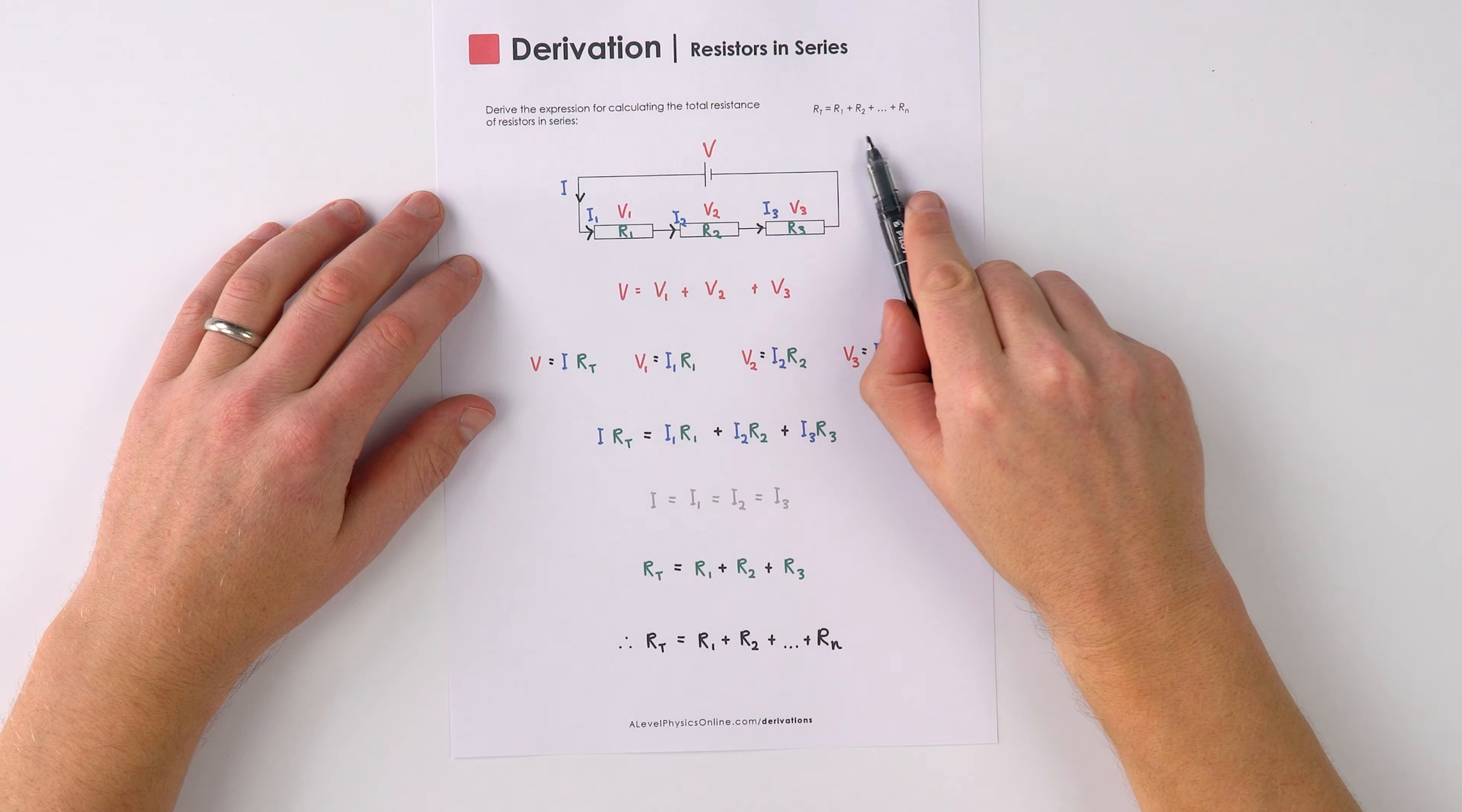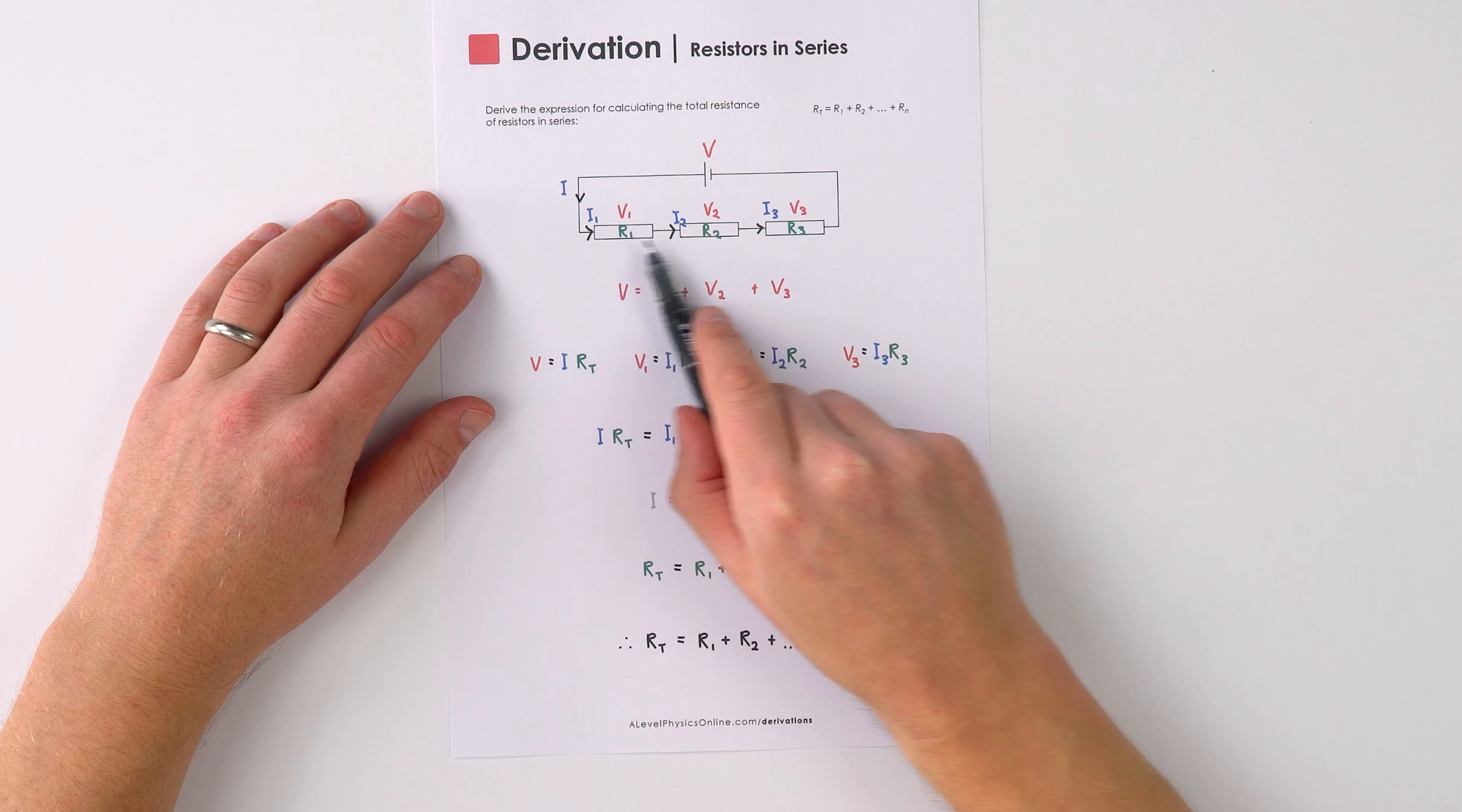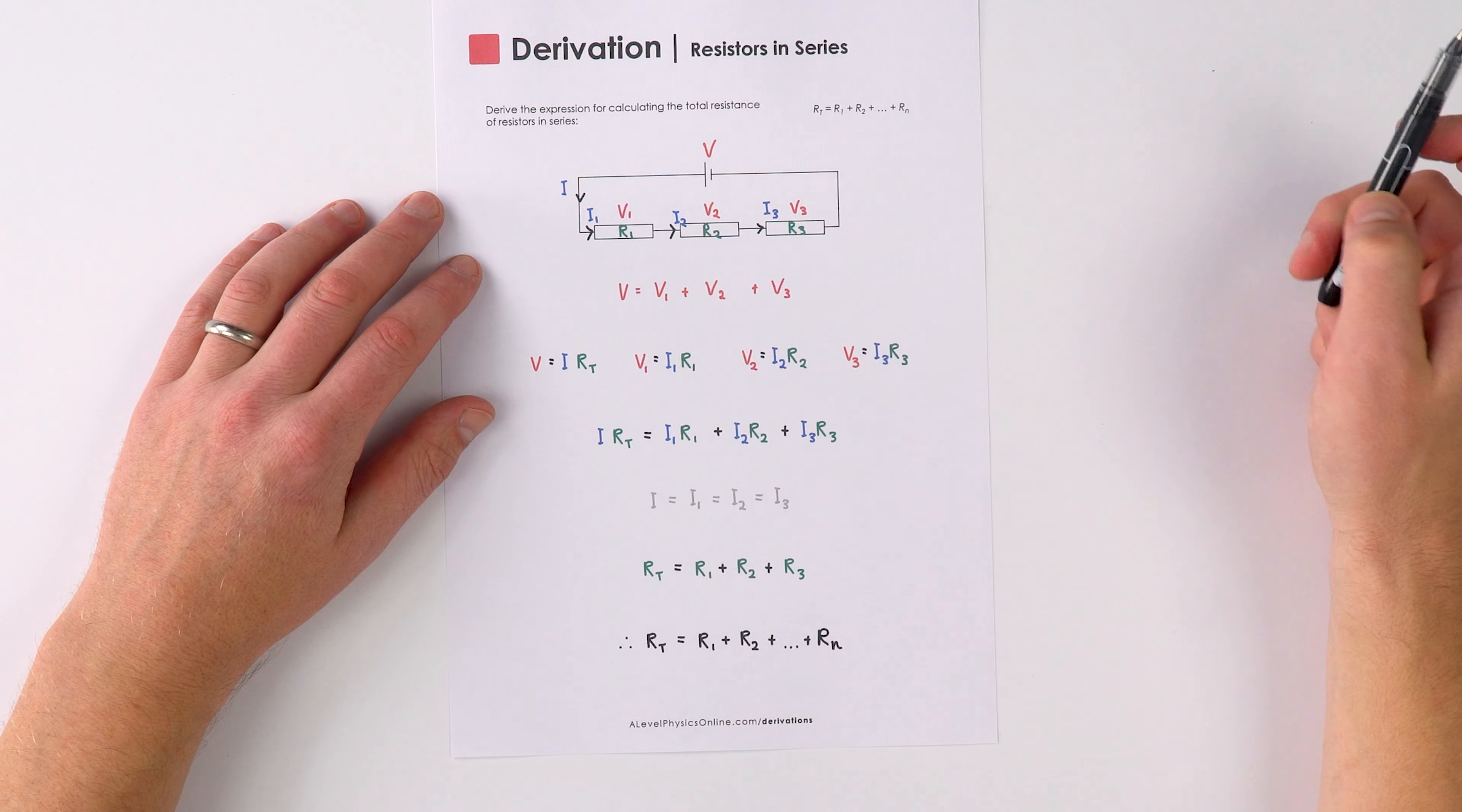This is how to quickly derive this equation for resistors in series. So we've got a very simple circuit with three resistors in it, 1, 2 and 3.